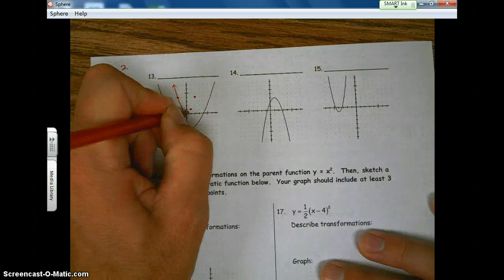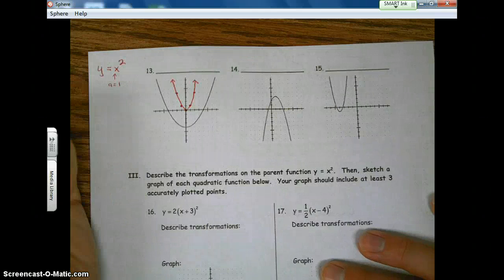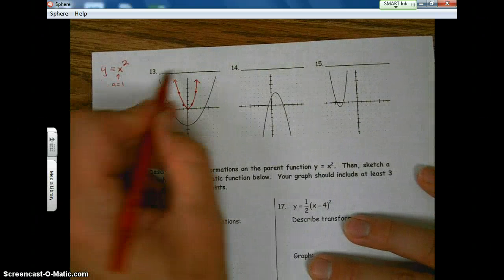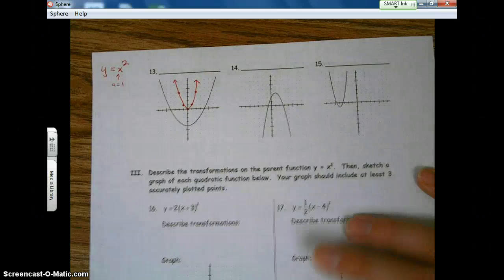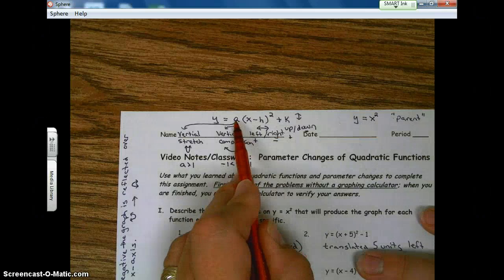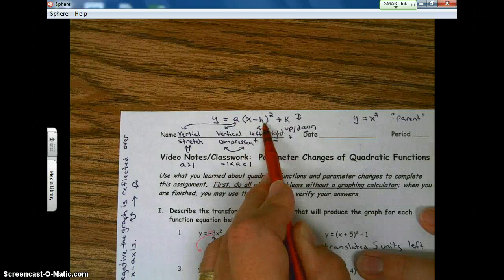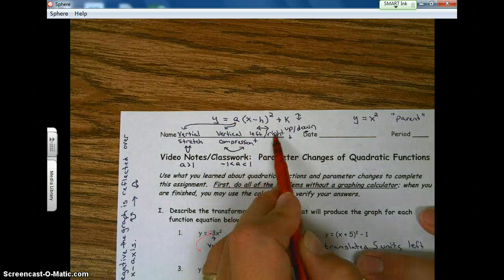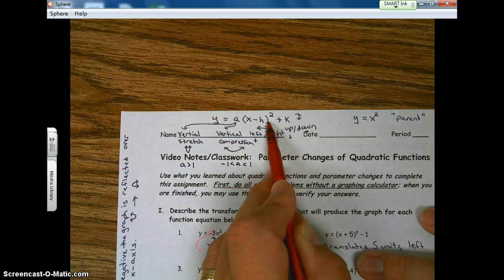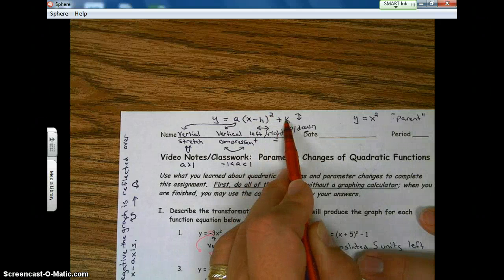This is our parent. Now that's not what this question is asking, but I'm just reviewing the parent function. So to write the equation, remember a value is the number in front. That's our multiplier, our dilation. H, if it's inside the parentheses, is left and right. K, outside of the parentheses, outside of the square, is up and down.